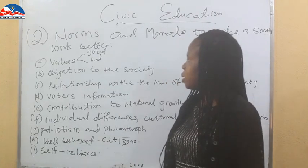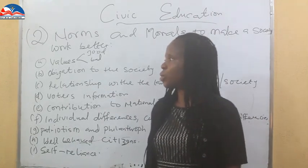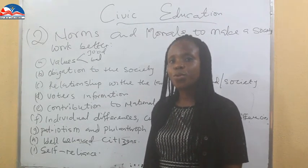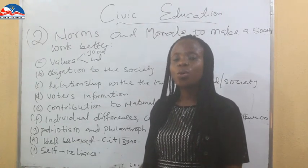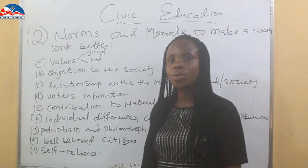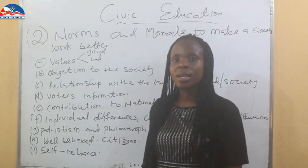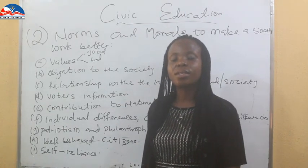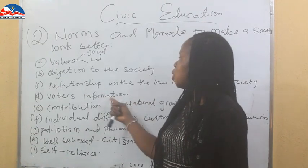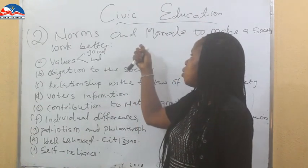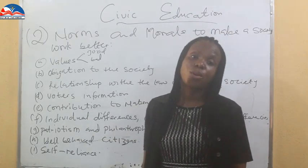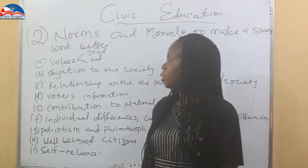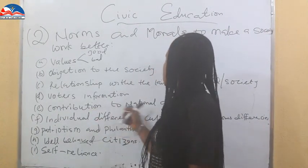The next one is voters information: who are you going to vote for, who is eligible to be voted for, who can vote, what restricts your voters' rights, and how do you conduct yourself during a voting exercise? All of these are information you have to abide by if you want to bring good morals and good norms to the society.